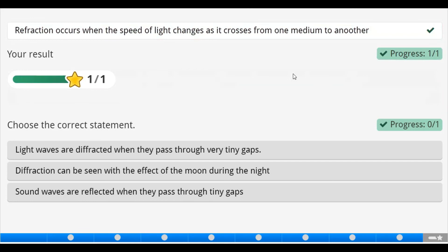Now, light waves are diffracted when they pass through very tiny gaps. That statement is correct. Now, let's move on to the second. Diffraction can be seen with the effect of the moon during the night. No. It will have been diffraction can be seen with the effect of sun during the day. Sound waves are reflected when they pass through tiny gaps. The statement is false. It can only be light waves. So, we pick it and also confirm.